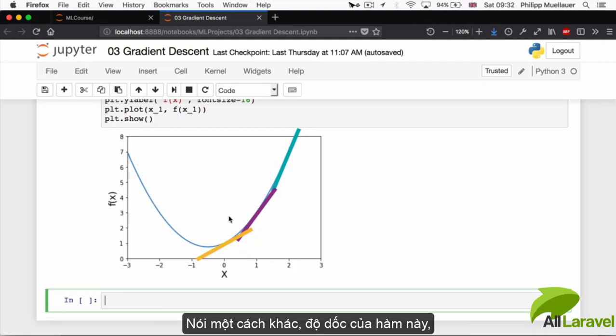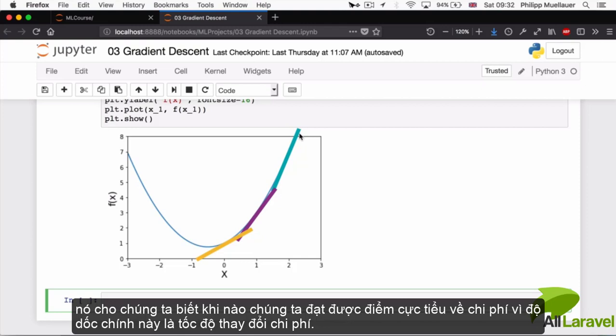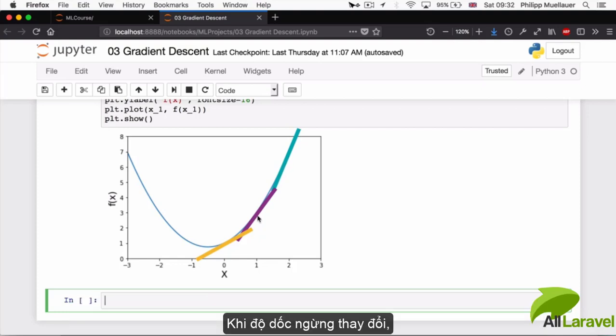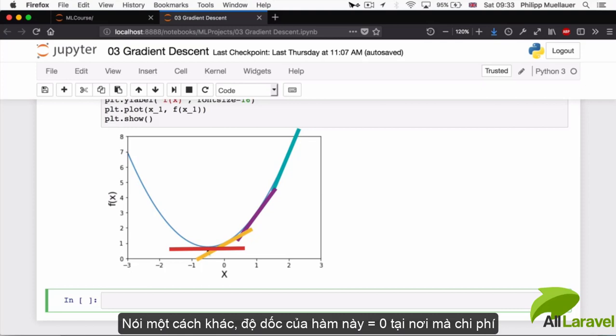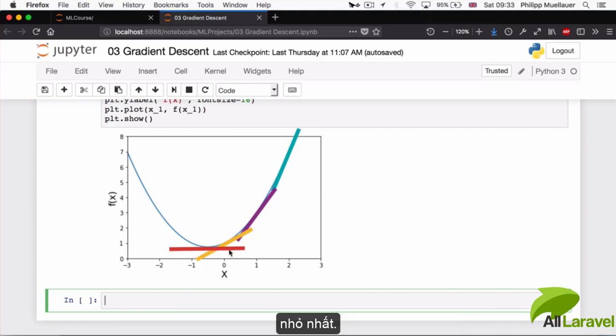So in other words, the slope or the steepness of this function is telling us when we've reached our minimum cost. Because that slope is the rate of change. And when this slope stops changing, on this graph we know that the cost is equal to the lowest value. In other words, the slope of this function is going to be equal to 0 at the point where the cost is the lowest.